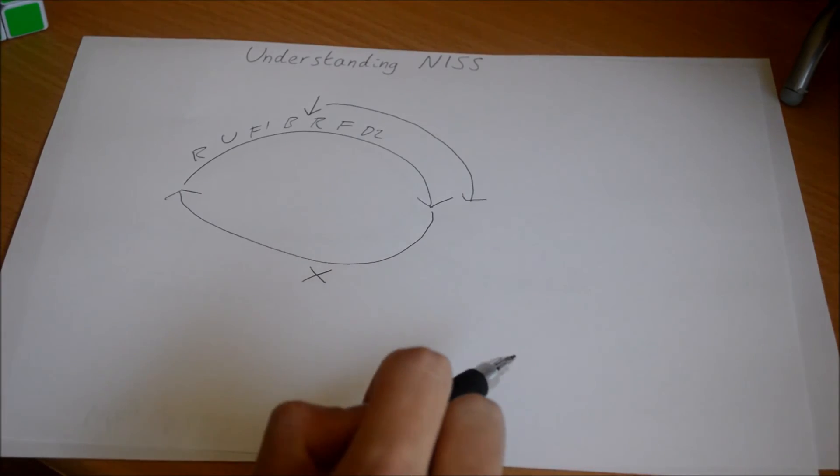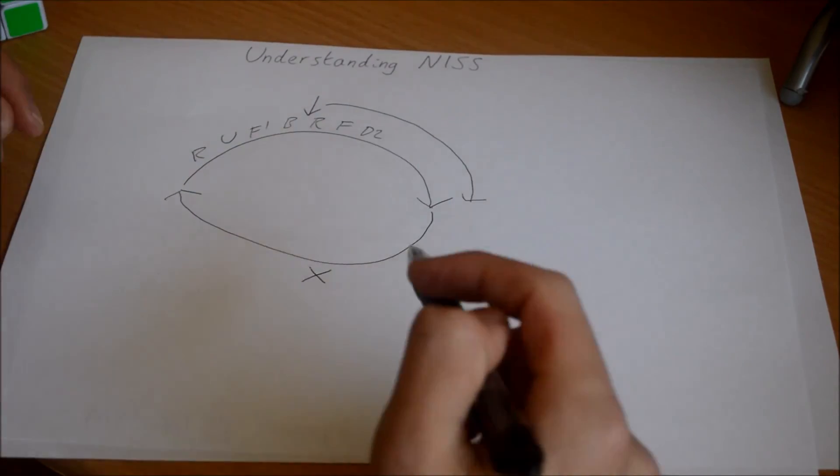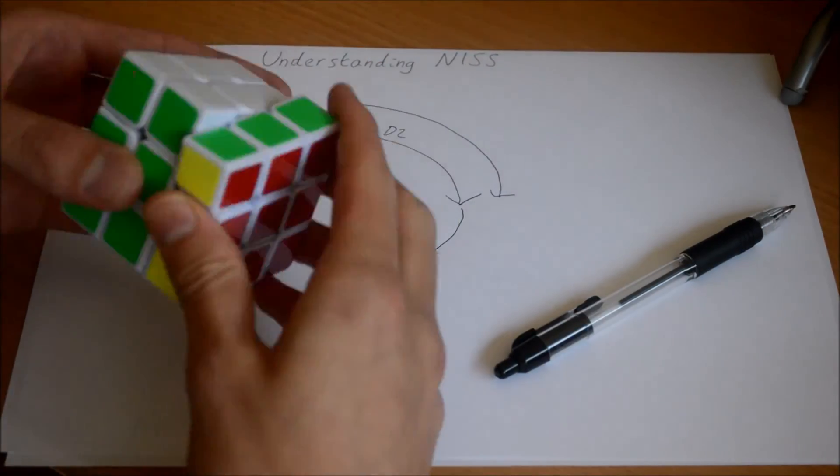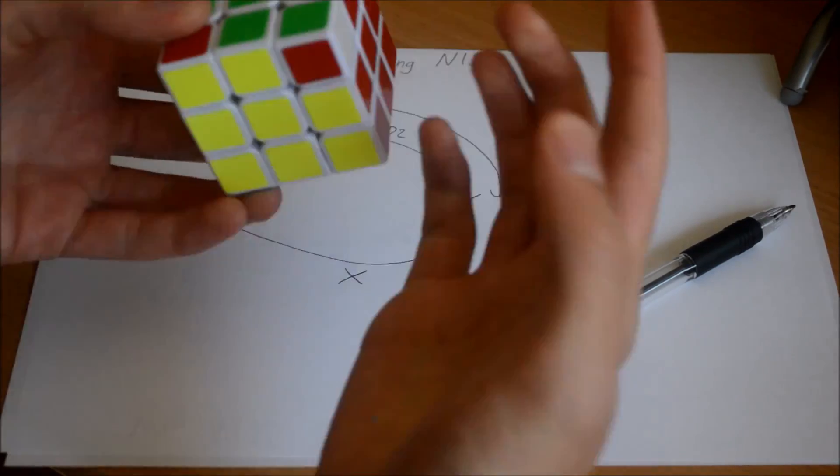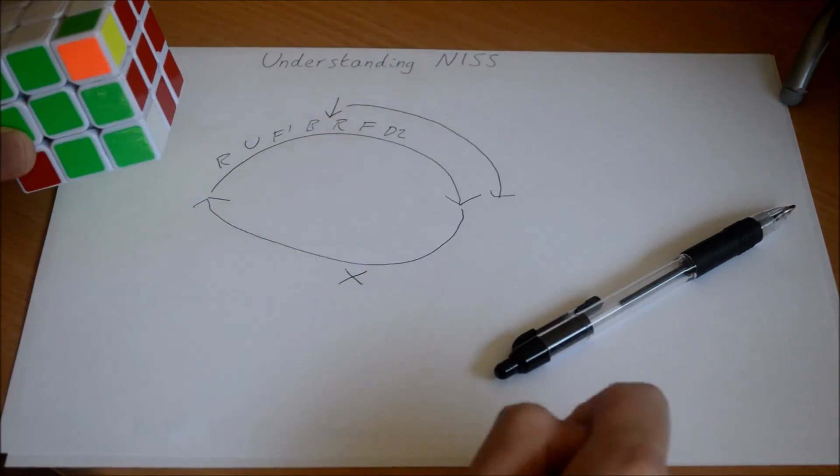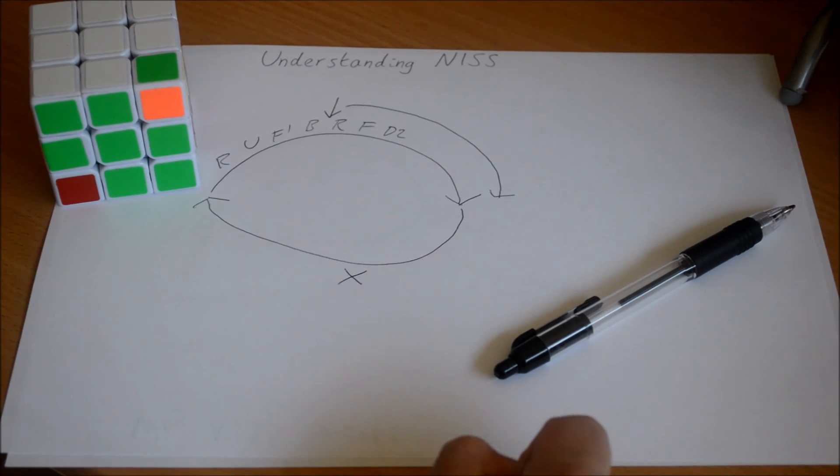And then maybe you get a magic loop which is leaving three corners. So then you just have to find a nice commutator, then you can go through your solution and find your commutator.